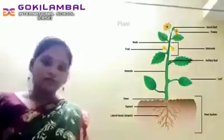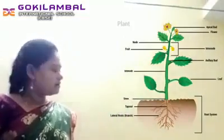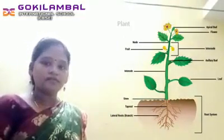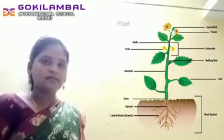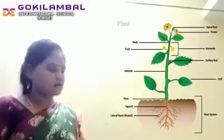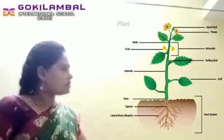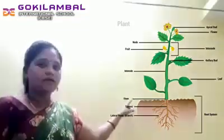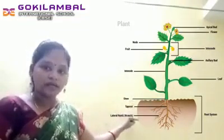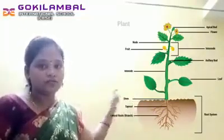The first one is root system and second one is shoot system. The root system means the parts of the plant that remain below the soil — this is called root system. And the parts of the plant that remain above the soil is called shoot system.